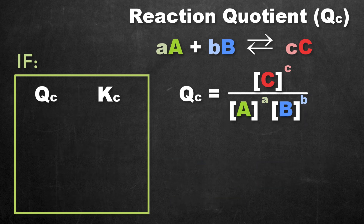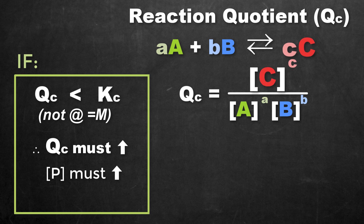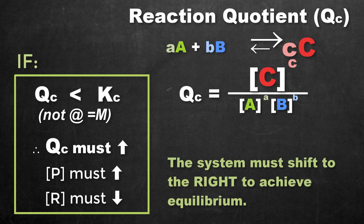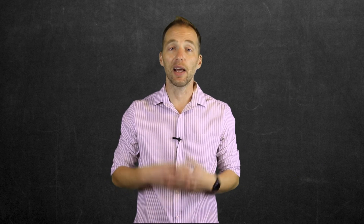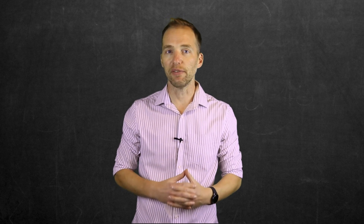If the values result in a QC less than KC, then in order for equilibrium to be established, QC will have to increase. For that to happen, the concentration of products in the numerator must go up, and the concentration of reactants in the denominator must go down. Since this is a closed equilibrium system, the only way this occurs is a shift to the right, or toward the product side. So QC allows us to quantitatively analyze whether a system is at equilibrium and, if not, how it will shift to achieve equilibrium.